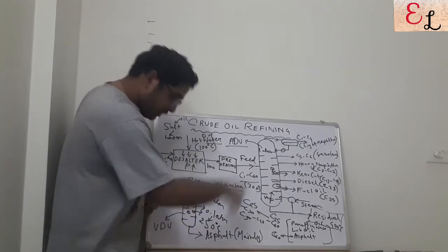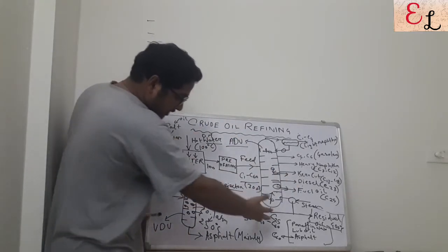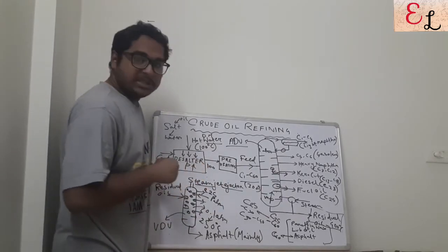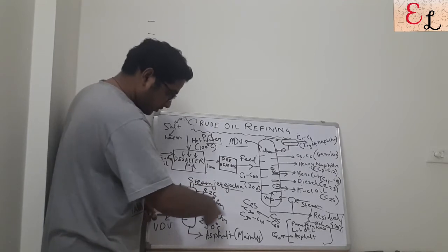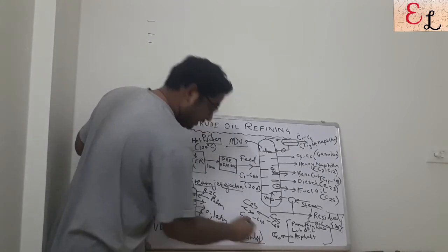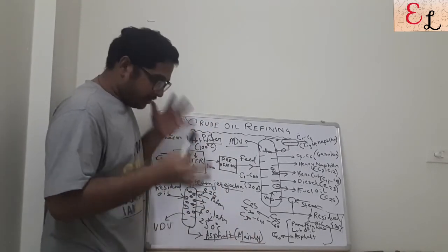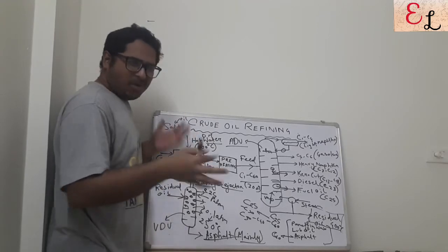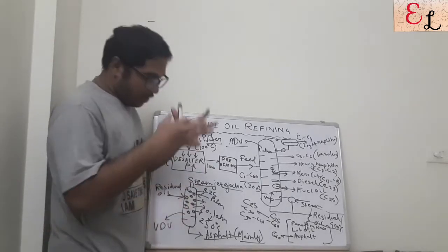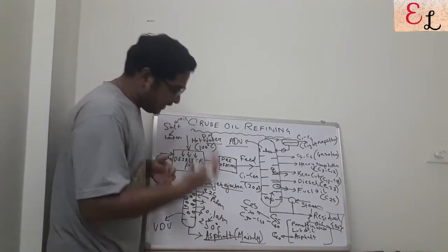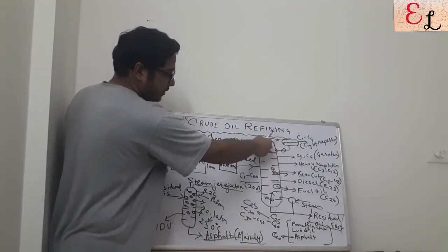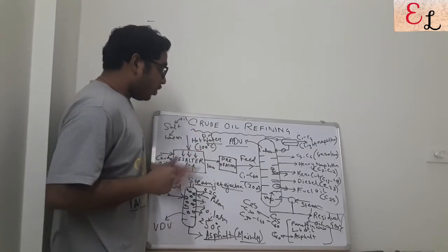Applying the same steam stripping principle in the VDU, C25 cuts are collected from the top, C30 cuts from side stripping, then C40 and C50, and whatever remains — mainly asphalt, pitch, or semi-solid material around C55–C60 — is released from the bottoms. The VDU maintains a vacuum using a steam jet ejector so that heavy cuts which did not vaporize in the ADU can vaporize and be separated in the VDU.